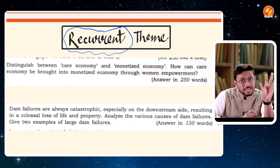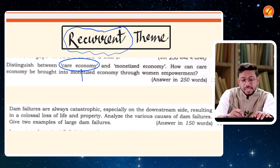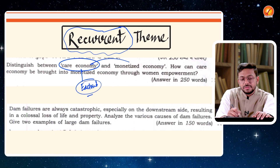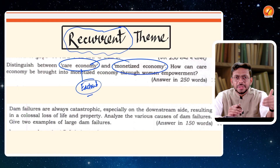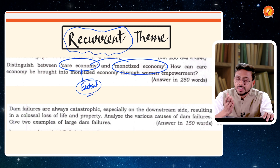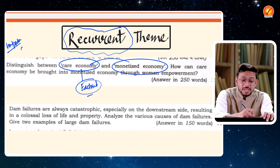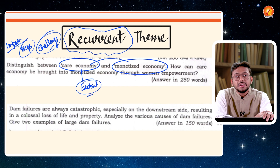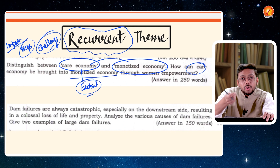Here are certain very recurrent themes on which questions have been asked. First: the care economy — very much in news with multiple editorials. One economy is a care economy, the other is a monetized economy. You need to understand the difference between care economy and monetized economy, the importance of care economy for India, what steps India is taking to stabilize it, and the challenges India faces. The major challenge is monetizing the care economy — it is majorly women who participate in care economy, caring for others. How do you monetize it? Only then will women's empowerment truly happen.